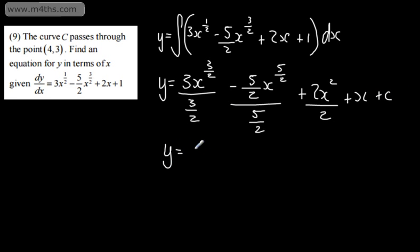So tidying up, 2x to the power of 3 over 2. If we're dividing by 3 over 2, we're multiplying by 2 thirds. The 5 over 2 is going to cancel, which will be nice. x to the power of 5 over 2 plus x squared plus x plus c.